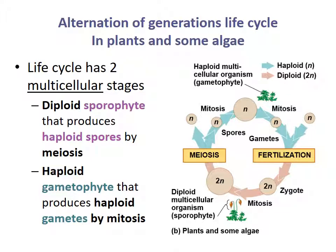Plants have a very different life cycle — they have two multicellular stages. The diploid multicellular form is called the sporophyte, and the haploid multicellular form is called the gametophyte. The diploid sporophyte produces haploid spores via meiosis. That haploid spore grows up to become the multicellular haploid gametophyte, and that gametophyte produces haploid gametes using mitosis, since it's going from haploid to haploid.